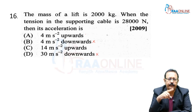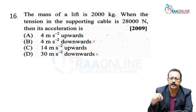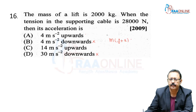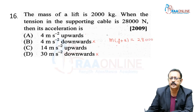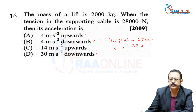Now, if the lift is going in upward direction, tension should be equal to m(g + a). They say tension is 28,000 newton. What is m? m is 2000. So we get g + a = 14 m/s².